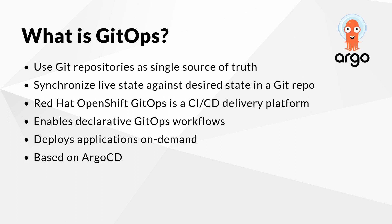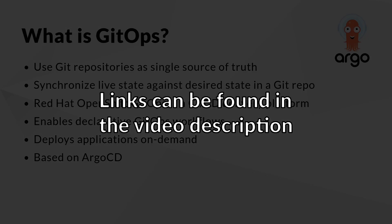Red Hat OpenShift GitOps is a CI/CD delivery platform. It enables declarative GitOps workflows and allows deploying applications on demand. It monitors the live state of clusters against the desired state in the Git repository and keeps them in sync. It builds on the Argo CD project. Therefore, the terms OpenShift GitOps and Argo CD might be used interchangeably. For more information, have a look at the GitOps documentation.